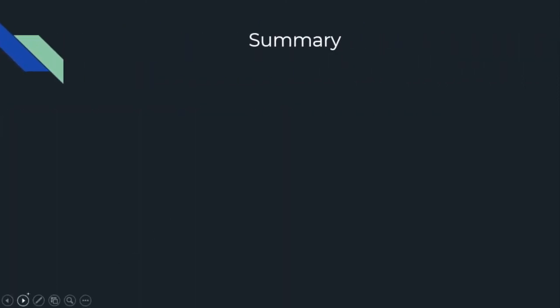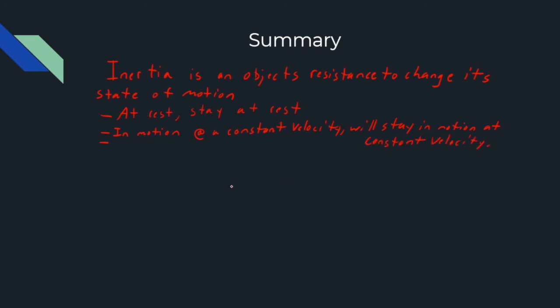So let's summarize what we just talked about. Inertia is an object's resistance to change its state of motion, and we said that this happens in three different ways. The first way is that an object at rest will just stay at rest. The second way that we can see this is that an object in motion will stay in motion at that constant velocity. And our last little definition is that an object that is moving in a straight line will stay in a straight line.